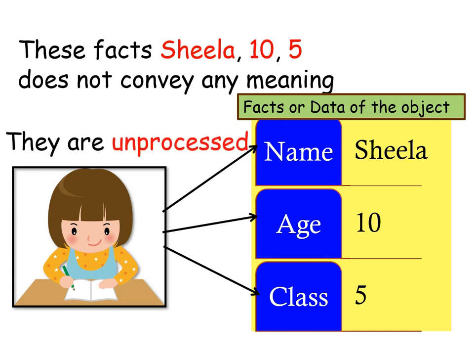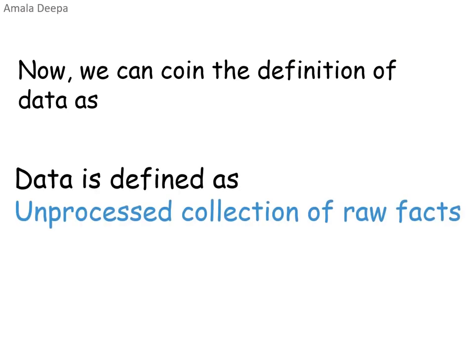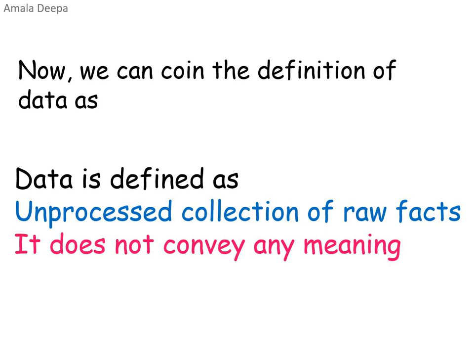The facts Sheila, 10, 5 can be interpreted in many ways. For example: Sheila has ten dresses of which five are new, or Sheila lives at door number 10 in the fifth cross. So these facts, unless they are processed, do not convey any meaning. We can now define data as an unprocessed collection of raw facts that does not convey any meaning.